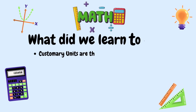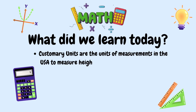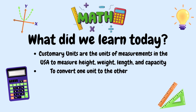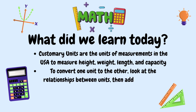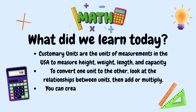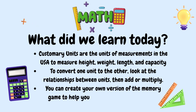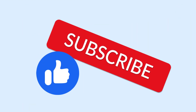So what did we learn today, mathematicians? We learned that customary units are the units of measurement in the USA to measure height, weight, length, and capacity. To convert one unit to another, look at the relationship between units and then add or multiply. And finally, you can create your own version of the memory game to help you memorize the equivalencies. Don't forget to like, subscribe, and hit that notification bell. Goodbye, mathematicians!